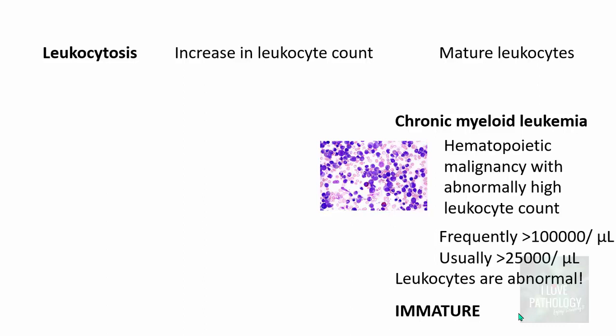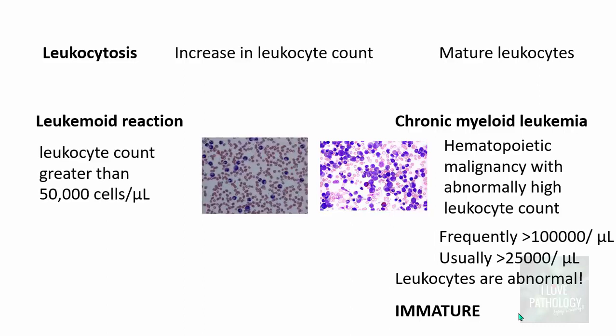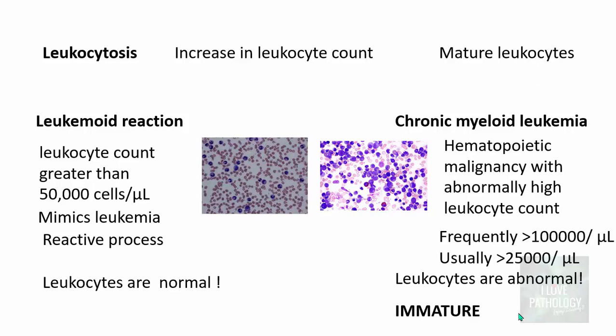Now let us understand another entity called leukemoid reaction. This is a condition where the leukocyte count is greater than 50,000 cells per microliter. It mimics leukemia, and that's why it's called leukemoid reaction. However, this is a reactive process — it is not leukemia.